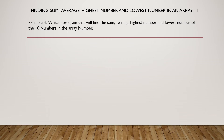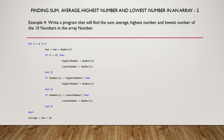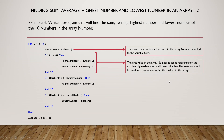Lastly, we will find the sum, average, highest number, and lowest number in the array. We need to declare the following variables: Sum to store the sum of the numbers, Average to calculate the average, Highest Number to output the highest number, and Lowest Number to output the lowest number. We will have a For loop from 0 to 9 that adds the value at index i to the variable Sum. The first value in the array is set as the reference for both Highest Number and Lowest Number, and this reference is used for comparison with other values.